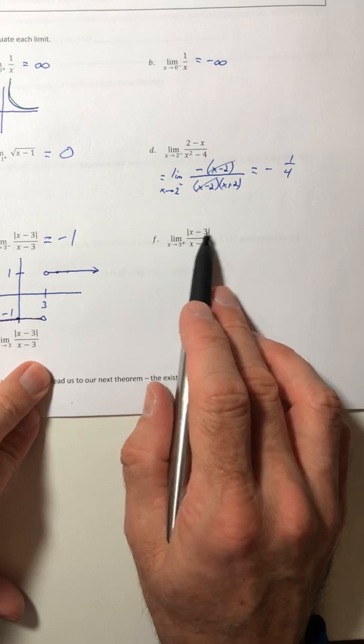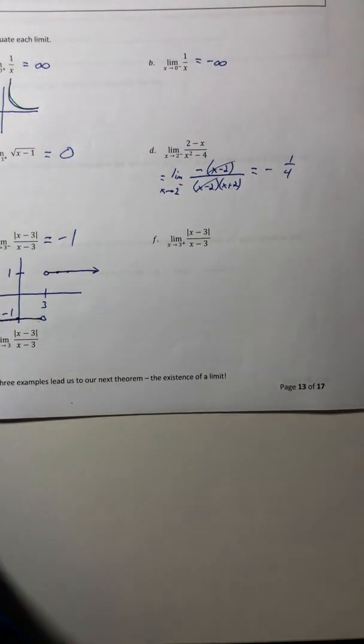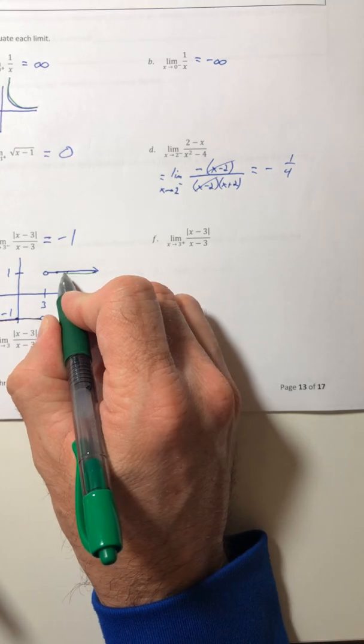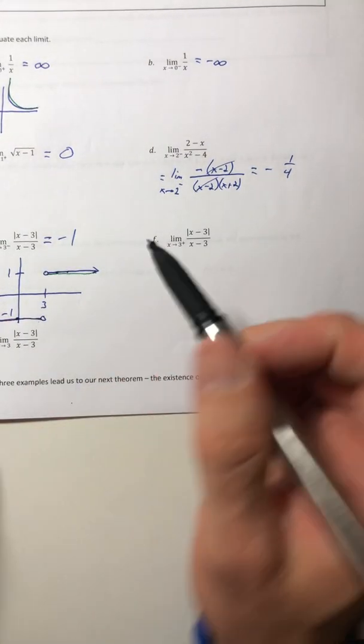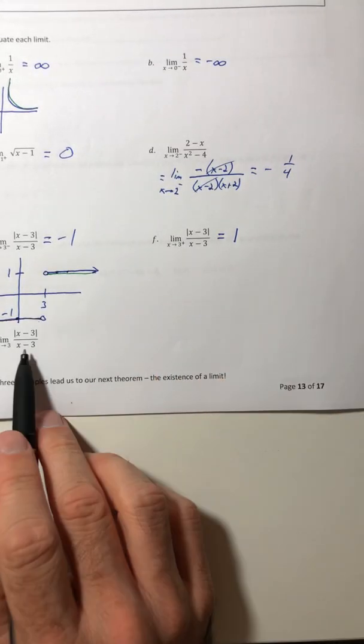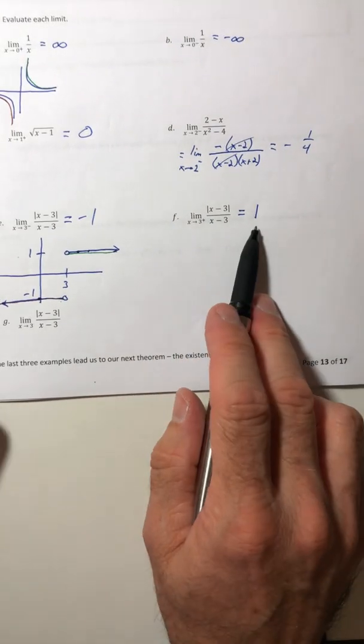Now for F, it's the same function. We're just coming in from the right. So the right side, trace and trace and trace and you get close to X equals three. Looks like you're going to run into Y equals one. So the limit was one.